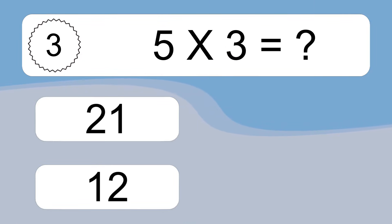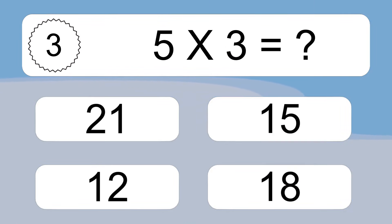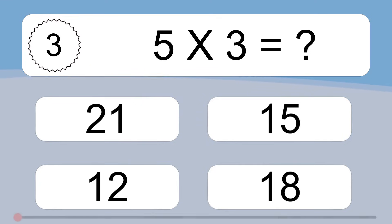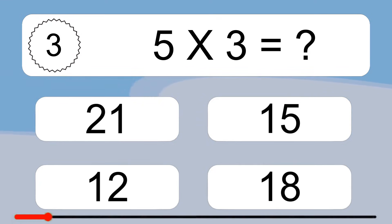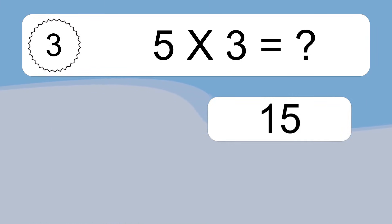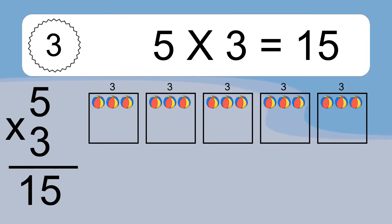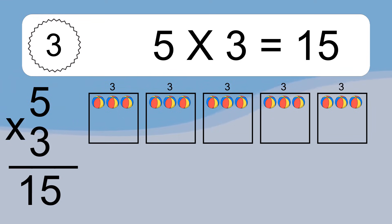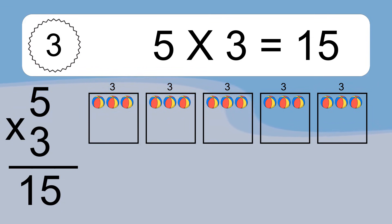5 times 3 equals what? We have 5 boxes, and each box has 3 colorful balls inside. If you count all the balls in all the boxes together, you will have 5 times 3 balls. This equals 15 balls.